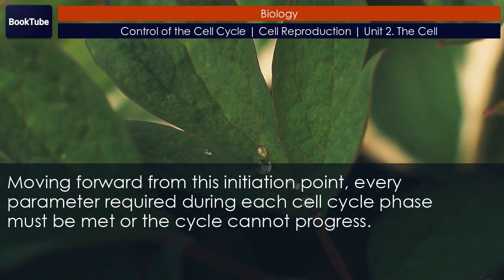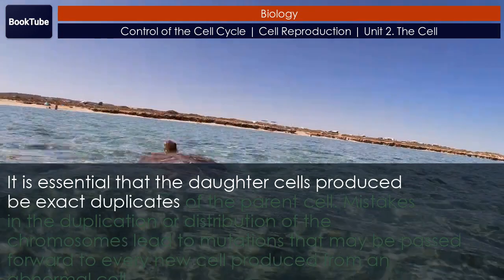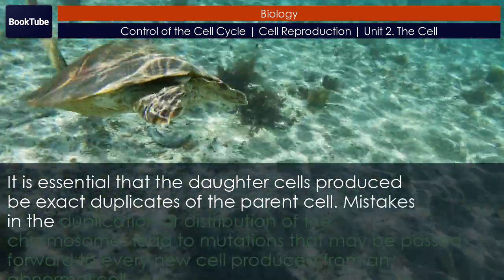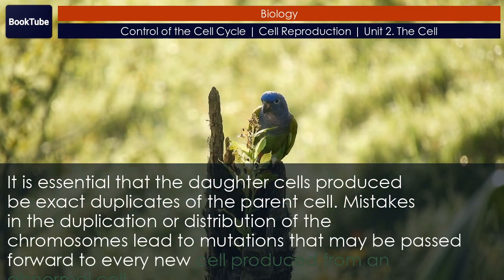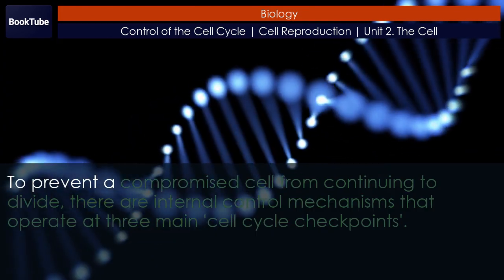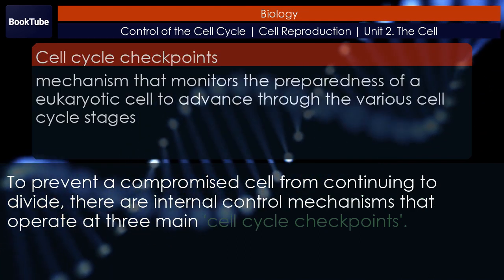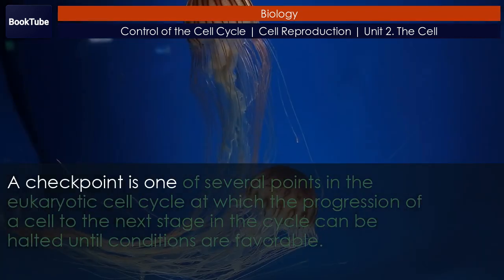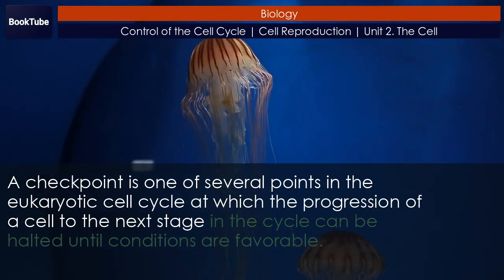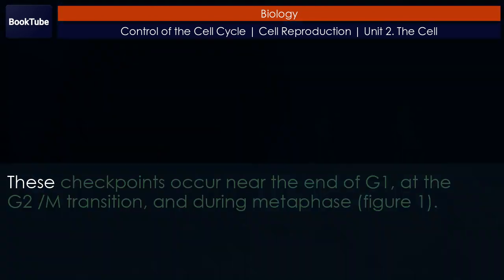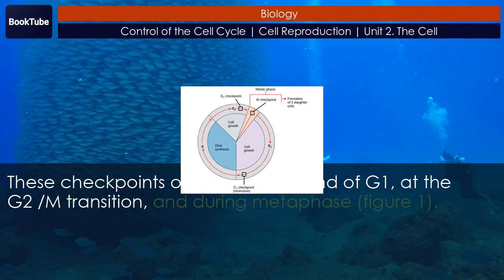Moving forward from this initiation point, every parameter required during each cell cycle phase must be met or the cycle cannot progress. It is essential that daughter cells produced be exact duplicates of the parent cell, as mistakes in chromosome duplication or distribution lead to mutations. To prevent a compromised cell from continuing to divide, there are internal control mechanisms at three main checkpoints, occurring near the end of G1, at the G2/M transition, and during metaphase.